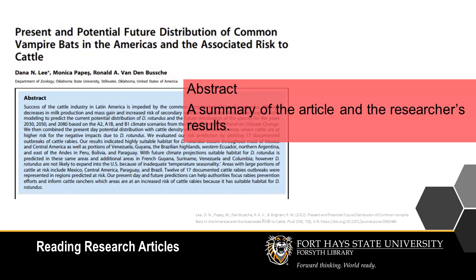The Abstract. The abstract is a summary of the article and may include an overview of the researcher's results. Sometimes the article's title can be misleading and the abstract can clarify whether the article really aligns with your topic. You may be able to read the abstract right from Forsyth Library or the database search page.